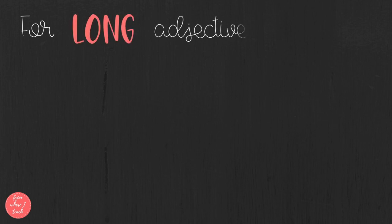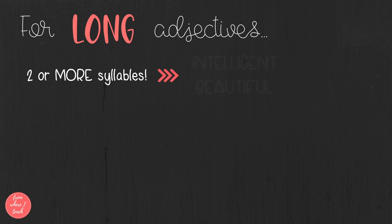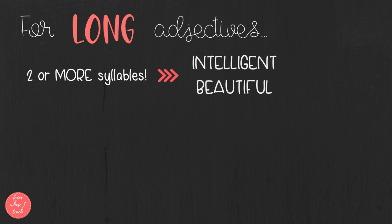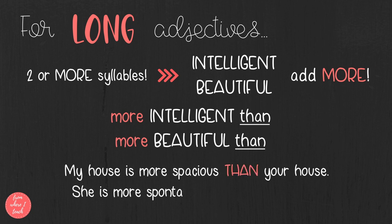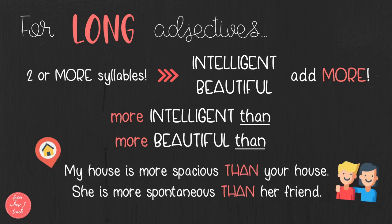Now for long adjectives — the ones with two or more syllables — we add 'more' at the end. For example, 'intelligent' or 'beautiful' turns into 'more intelligent than' or 'more beautiful than.' So: my house is more spacious than your house, or she is more spontaneous than her friend.